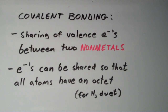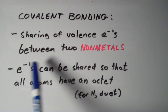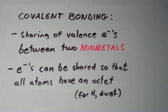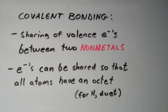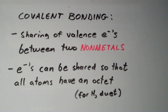The answer is: you have to remember that covalent bonding is a sharing of valence electrons between two non-metals. These two non-metals can share electrons in such a way that both — or all — of the atoms possess an octet. And in the case of hydrogen, it's a duet. If you want a good explanation of the definitions of an octet and a duet, you can go to one of the earlier videos in this playlist.